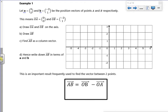So draw OA and OB on the axis. OA goes to 3 across 2 up, which is there. So that's the vector O to A.